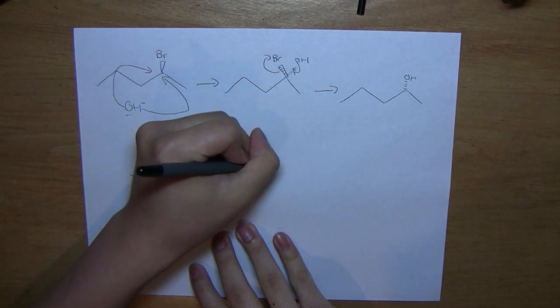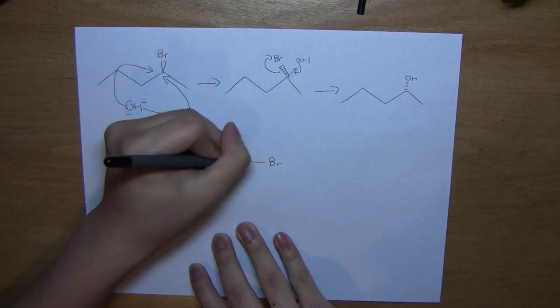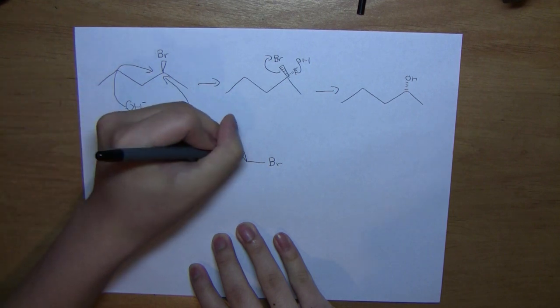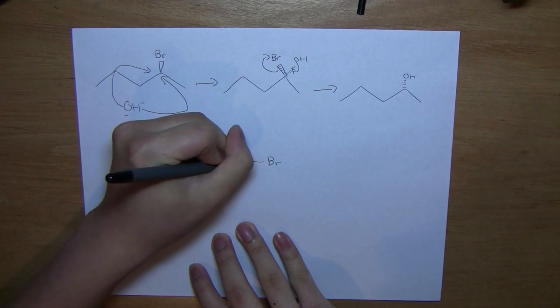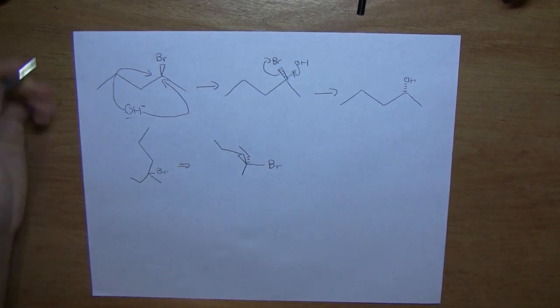So we have the bromide coming to the right, and we have the ethyl group here, and then we have the methyl group. So as stated previously, in an SN2 reaction, we have to have the nucleophile, in our case hydroxide, attack from the opposite side.